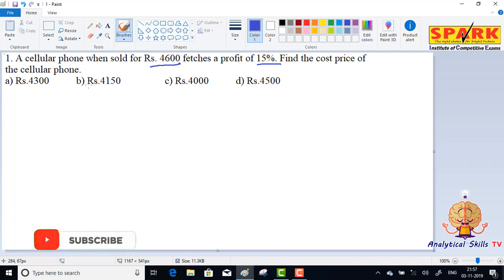...fetches a profit of 15%. The profit is 15%. So when we get 4600, what was the cost price? With 15% profit on it, we sold it at 4600 rupees. So the selling price is given.